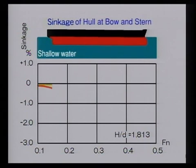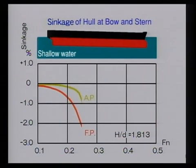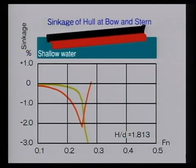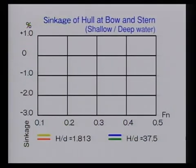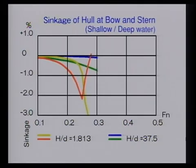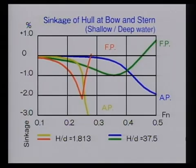Now we shall see how sinkage changes depending on speed when a ship proceeds in shallow water. For ship speeds with a corresponding Froude number less than 0.25, sinkage at the bow is greater than that at the stern as the Froude number increases. However, sinkage at the bow stops suddenly and that at the stern finally increases, changing trim by the stern, as the Froude number approaches 0.25, which is close to values in high-speed areas. Sinkage at the bow in shallow water, which reaches 2% of the length of a ship, is larger than that in deep water.